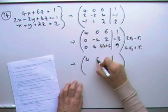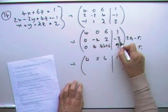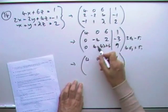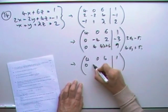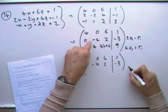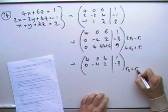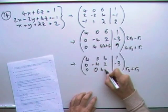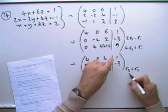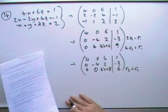Right, next bit. I'll leave them alone. 0, -4, 2, -3. Now to knock them out, row 3 plus row 2. So that goes to 0, that goes to 0, and that makes 4λ + 8, and that makes 6. And that's as far as it goes.